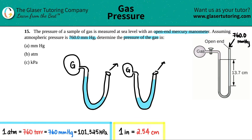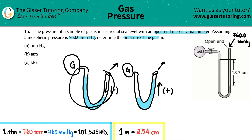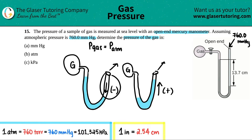A helpful rule: if the right-hand (atmosphere) side is lower, think subtraction. If the right side is higher toward the atmosphere, think addition (plus). In our case, since the atmosphere side is lower, the pressure of the gas equals atmospheric pressure minus the height difference: P_gas = P_atm − h.